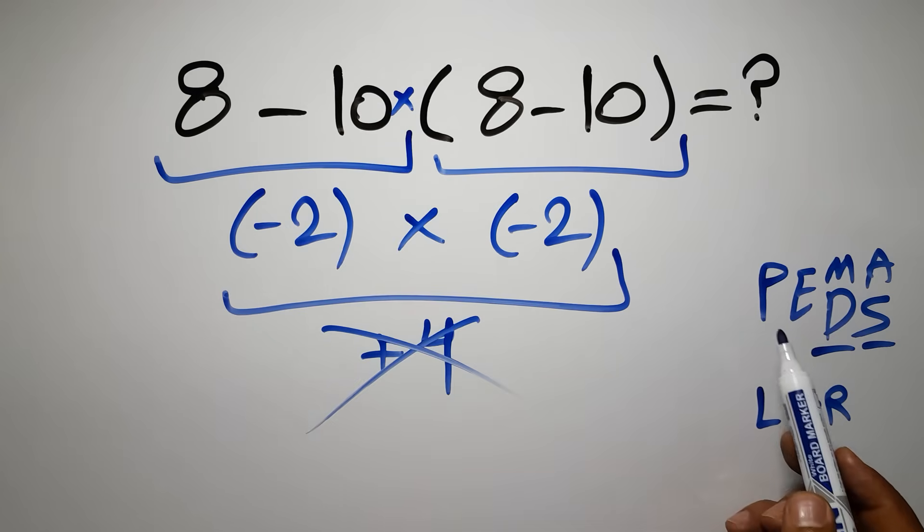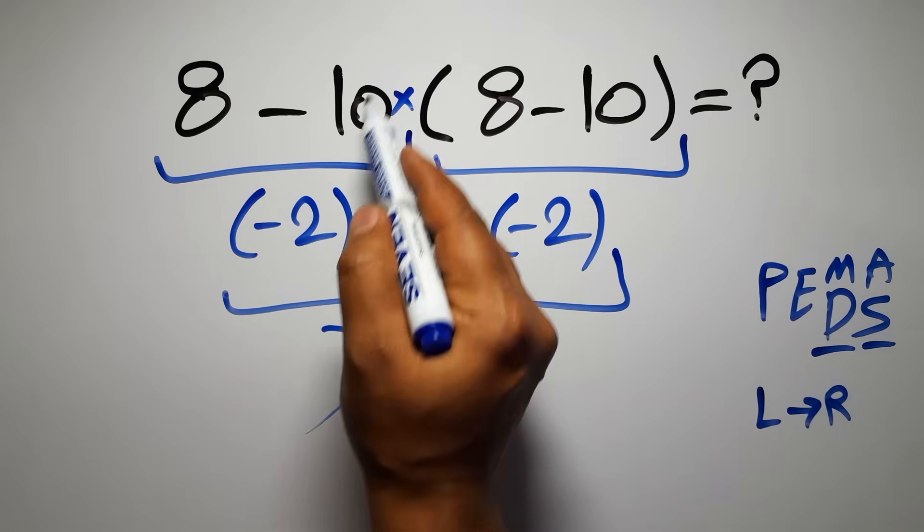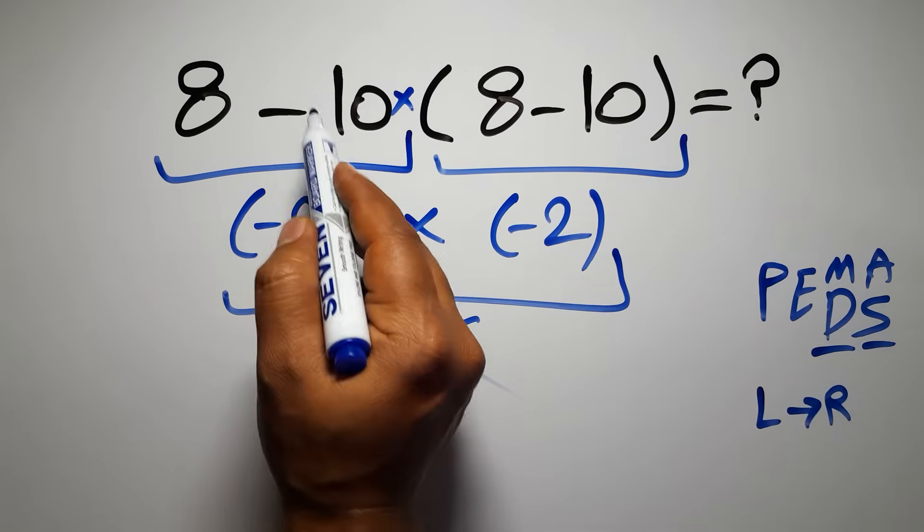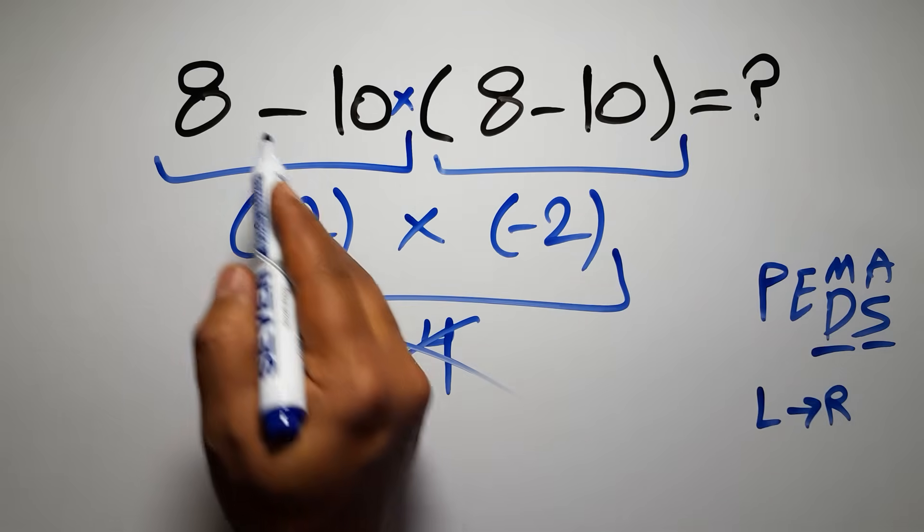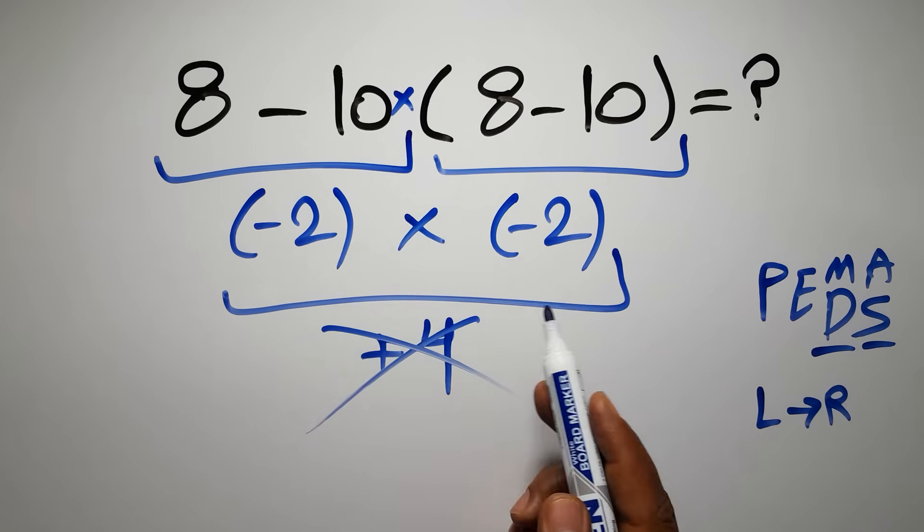So according to the PEMDAS, first we have to do these parentheses, then this multiplication, and finally this subtraction. If we do this subtraction before this multiplication or this parentheses, it is wrong.